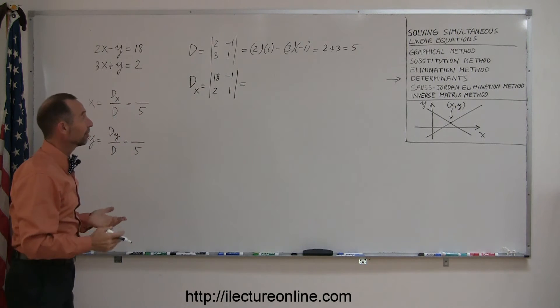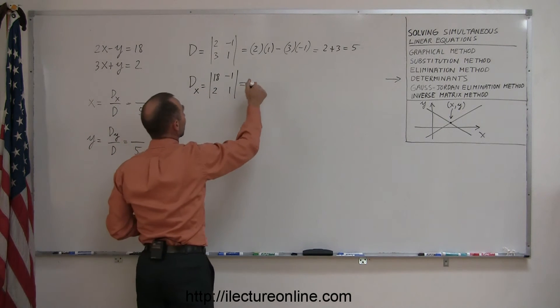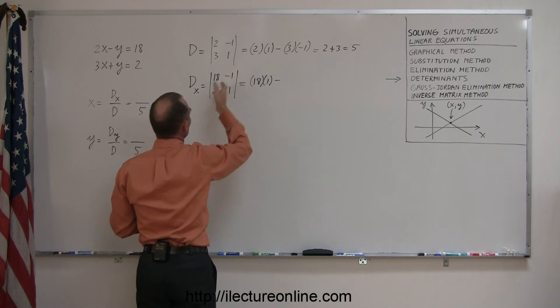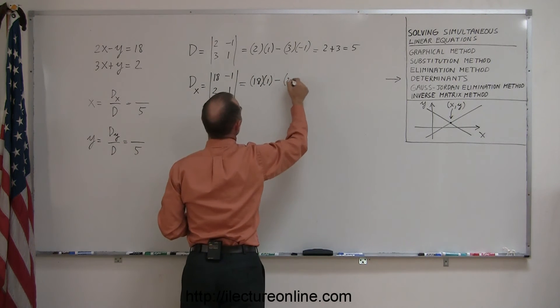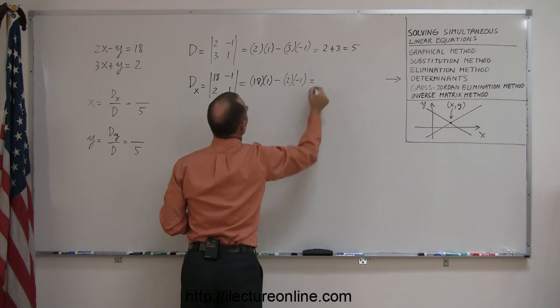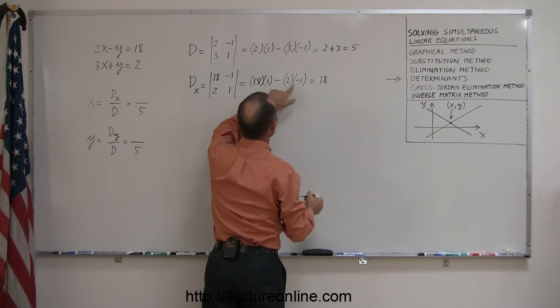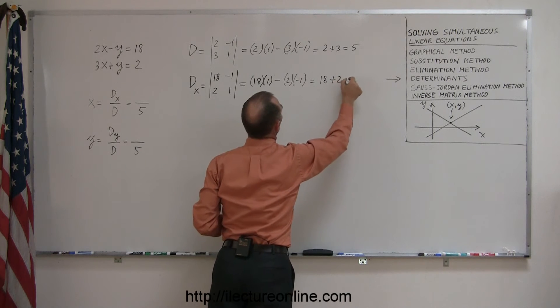Working out that determinant in the very same way, we'll multiply these two together right here, in this diagonal, 18 times 1, and subtract from that when we multiply those two elements together. And so we get 18 minus a minus 2 which becomes plus 2, or 20.